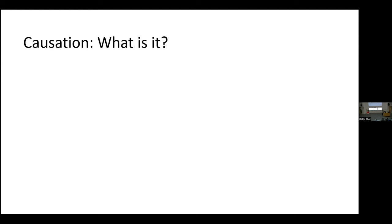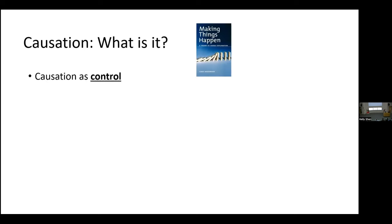Causation: what is it? The account of causation I rely on — and common in philosophy of science right now — is understanding causation in terms of control. This is the interventionist account, popularized and discussed by Jim Woodward in his book Making Things Happen. The idea is that X is a cause of Y if an intervention on X that changes its values gives you control over Y. To be more precise, it's actually hypothetical control.